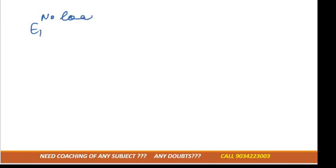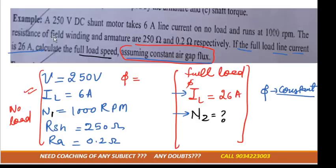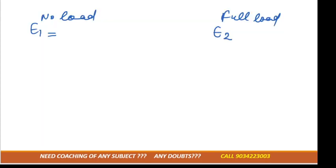E1 is for no load and E2 is for full load. So we are having separate E1 and E2. You know the formula - as they have mentioned it is a DC shunt motor, so for DC shunt motor what is the formula for EMF? That is V minus Ia×Ra.